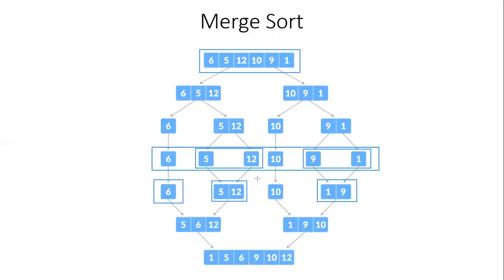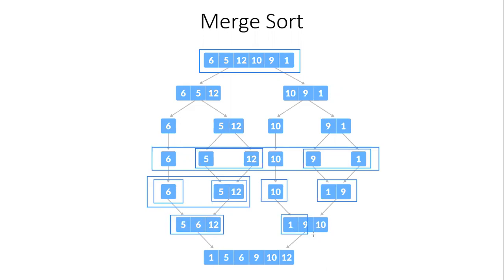These two lists are already sorted. We merge sort them: 5 is smallest, place first; then 6; then 12 — a sorted list of three elements. Similarly, merge the other two lists to get [1, 9, 10]. The final merge sort step: 1, then 5, then 6, then 9, then 10 — the only element left is 12. We get the final sorted list from the unsorted list.